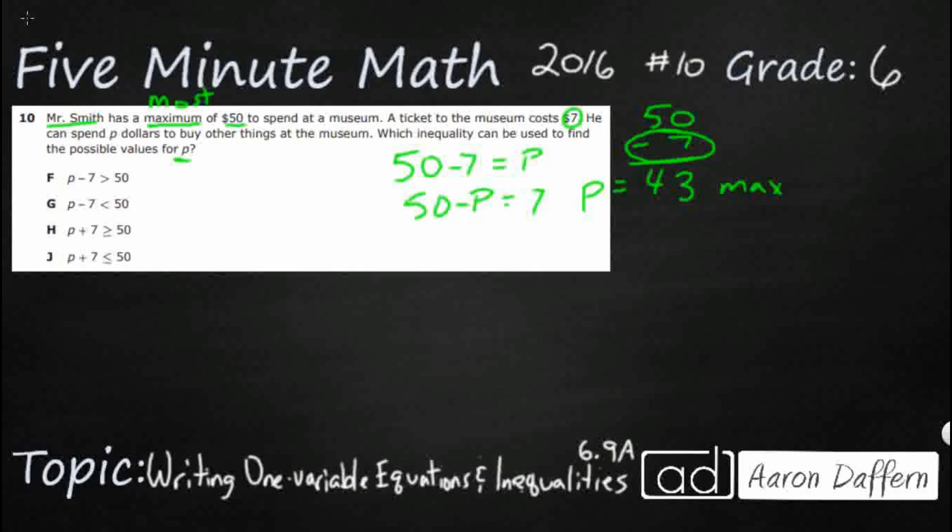So then we can do 50. We can do some fact families here. And so that's going to get us our max right there, is we can take away that 7, and that's going to give us that 43.